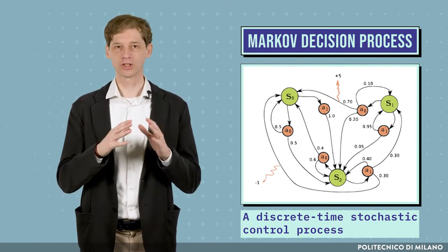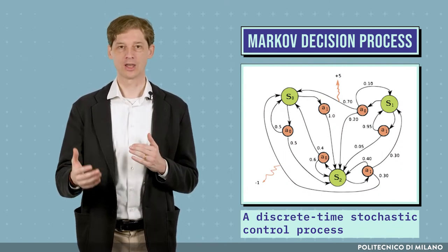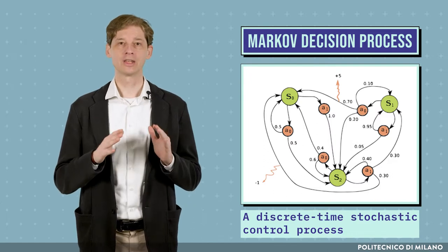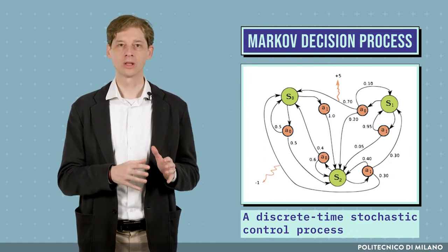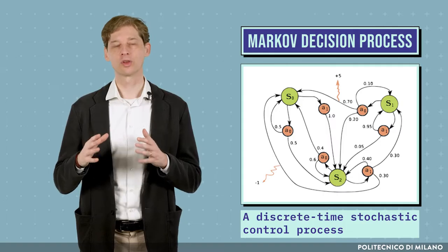In an MDP, an agent can observe the state of the problem, perform an action, and observe the effect of the action in terms of the immediate reward and the state that is reached because of that action.